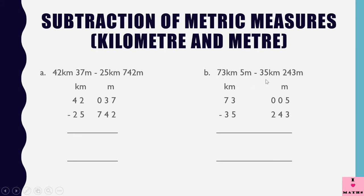We write 25 in the kilometers column and 742 in the meters column. Same way, if we have to subtract 35 kilometers 243 meters from 73 kilometers 5 meters, in kilometers we write 73 and in meters we write 005. For the quantity being subtracted, we write 35 in kilometers and 243 in meters. After this, we subtract normally.